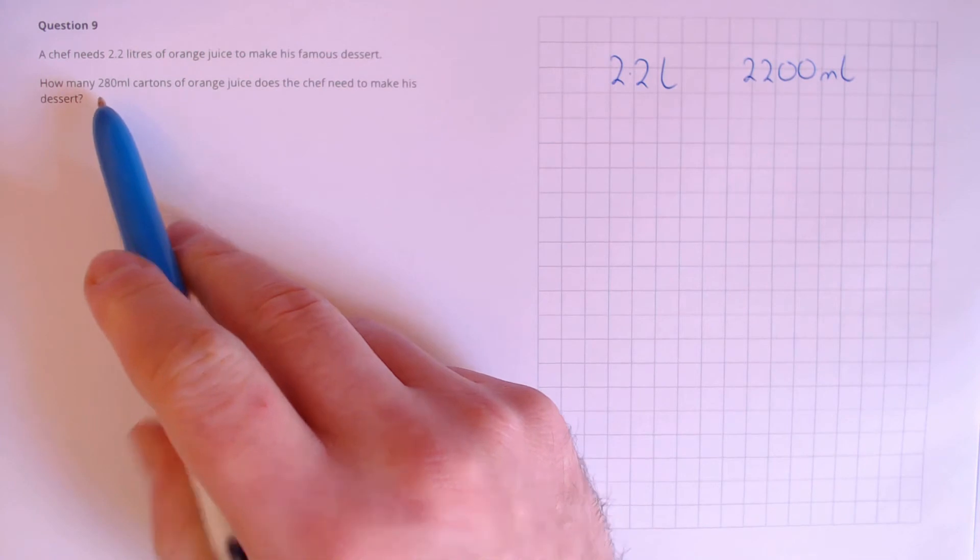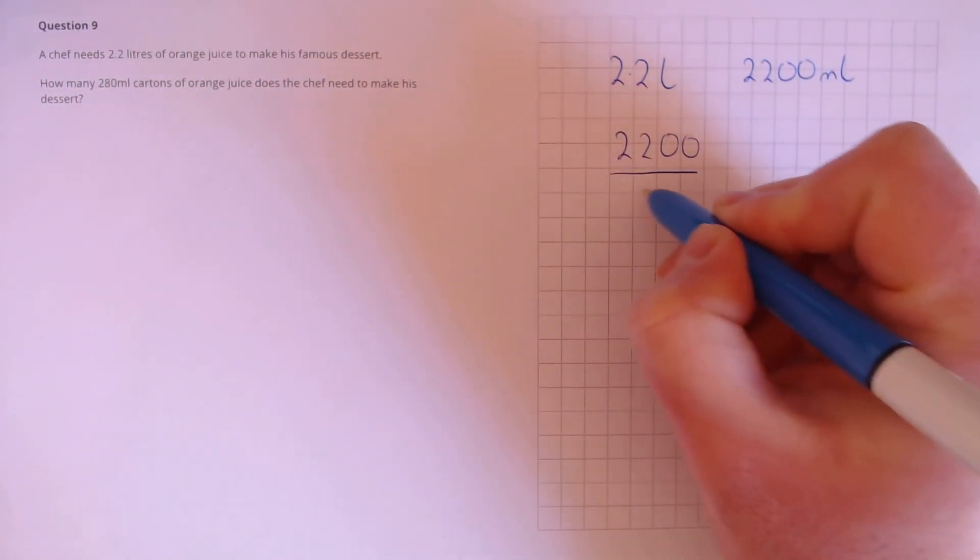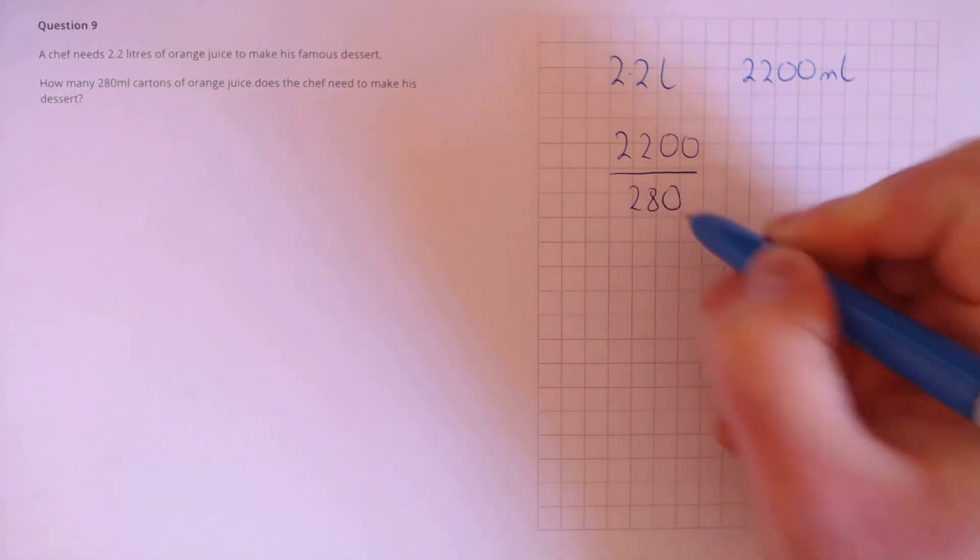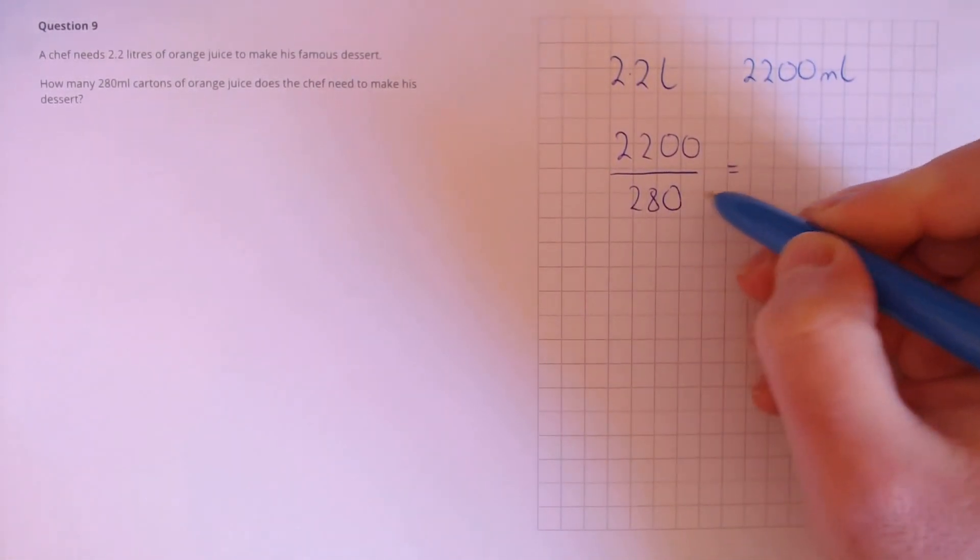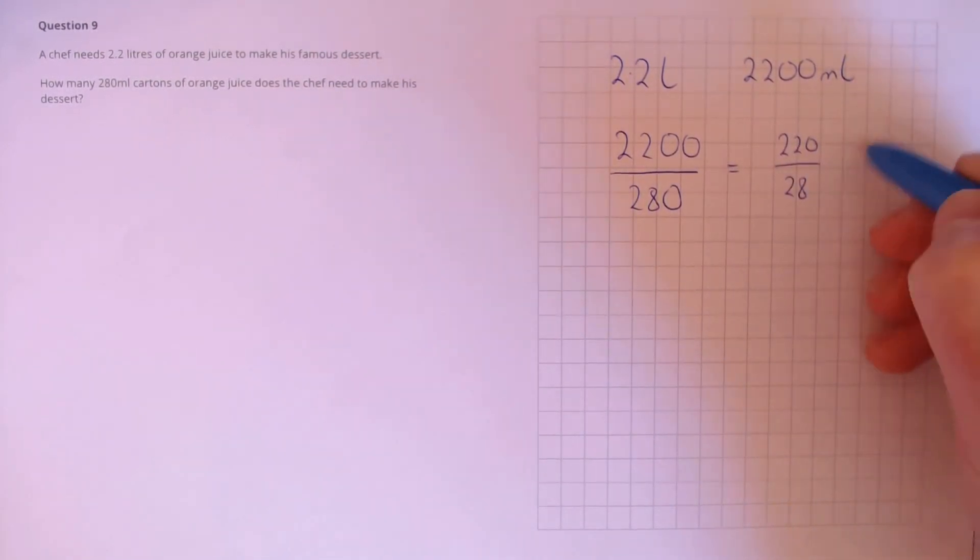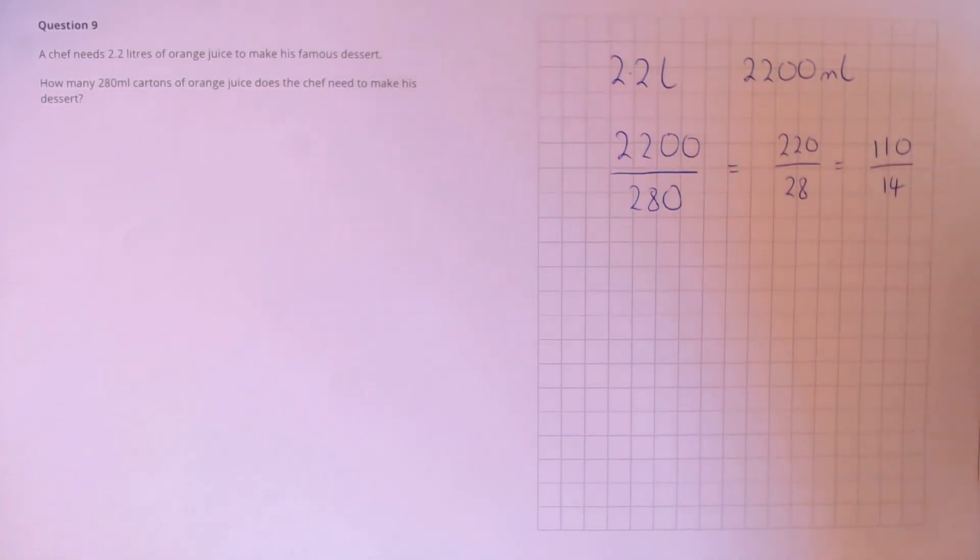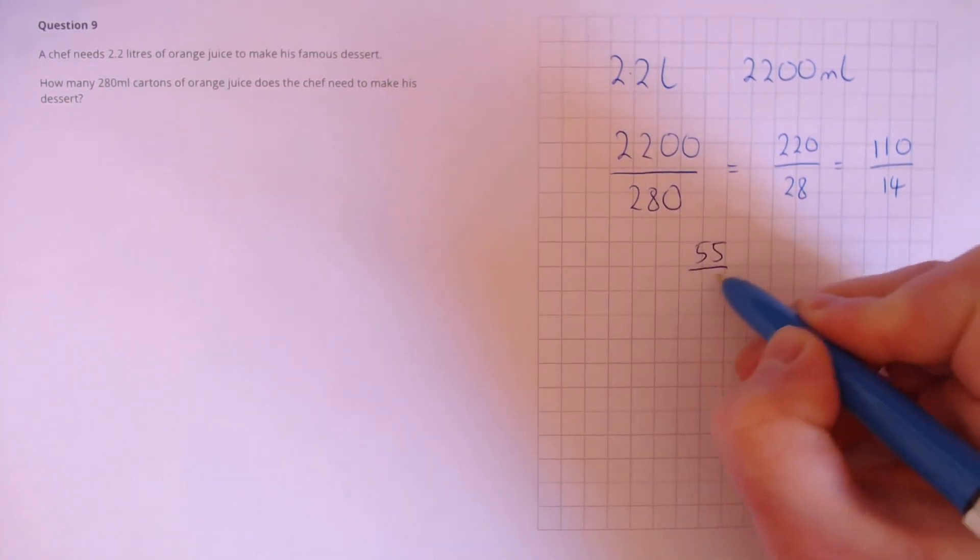To find out how many cartons are required, we need to divide the total, 2,200, by 280. Let's simplify this fraction. So, we can see that they both divide by 10, so that's 220 over 28. And then we can divide by 2, which is 110 divided by 14. And then again, we can divide by 2, which gives us 55 divided by 7.